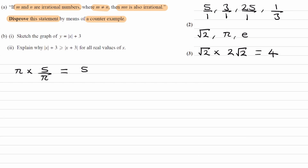Or, if you have e to the power of 3 multiplied by one third of e to the power of minus 3, this gives you one third. The e³ multiplied by e⁻³ gives e to the power of 0, which is just 1, so the result is 1 over 3. Those are three examples — you only need one, but I've shown a few different ways. Therefore, the statement is incorrect.